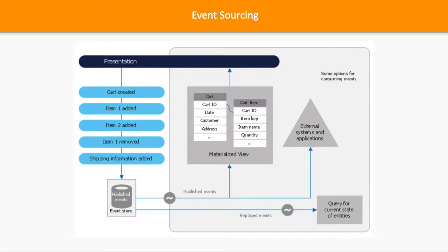Event sourcing introduces an event store which keeps a stack of all the events together and then publishes them. For example, you have: cart created, item 1, item 2, item 1 quantity updated, shipping information added — these five or six events are first put into the event store. Now you have the full information of events which are going to be published, and then they get published and processed.